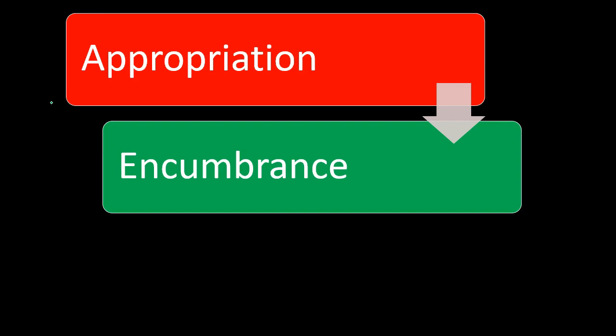So the process looks like this: first, we record the appropriation — the budgetary account — estimating what the expenditures will be. Then we have the encumbrance, when we're committed to the item with a purchase order, estimate, or approved contract. We record this in what I would call a clearing or holding account — an interim account — because we cannot yet record the actual expense under accrual or modified accrual basis since we haven't received anything and haven't paid for anything. We want to be transparent that the appropriation has been committed to a specific contract or purchase order.